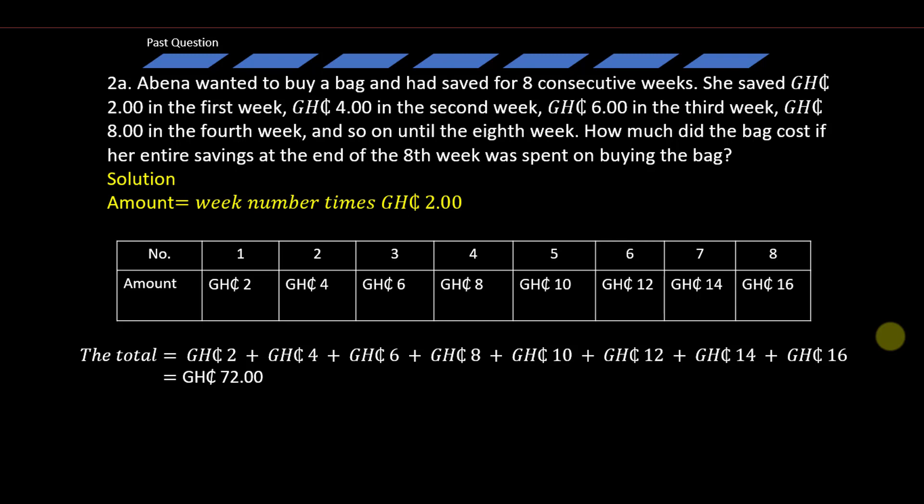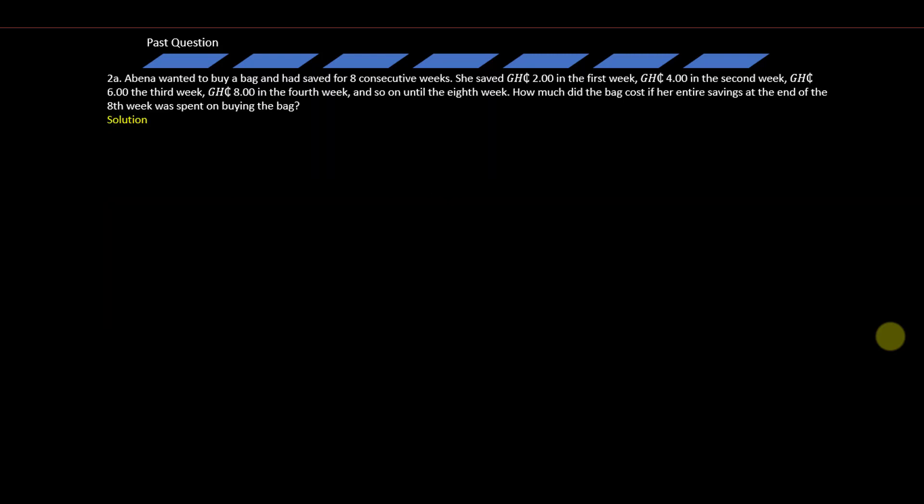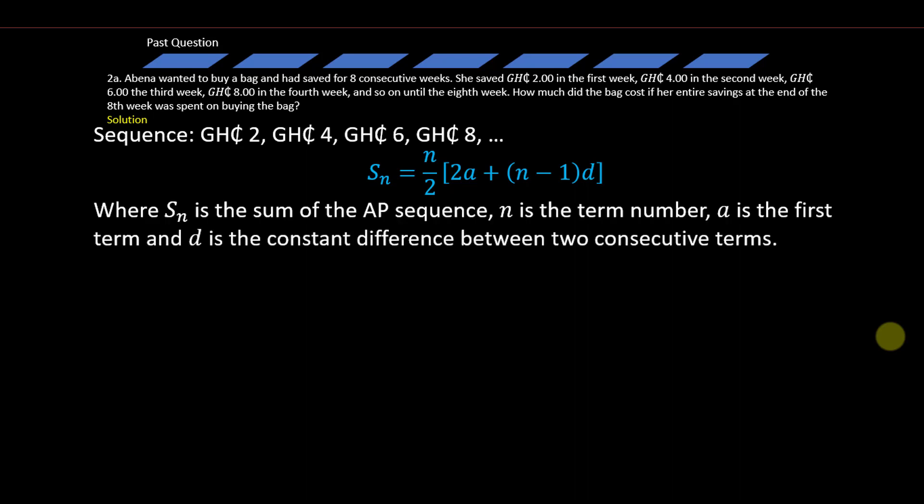But this is not the only approach. We can also use the formula for sum of an arithmetic progression. Here the sequence is 2 cedis, 4 cedis, 6 cedis, 8 cedis and so on. The sum of an arithmetic sequence is simply S_n equals n over 2 times open bracket 2a plus open bracket n minus 1 close bracket times d close bracket, where S_n is the sum of the AP sequence, n is the term number, a is the first term, and d is the constant difference between two consecutive terms.